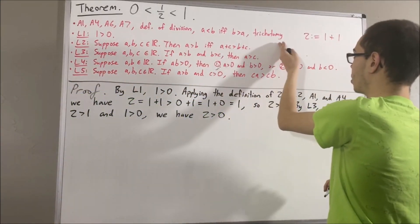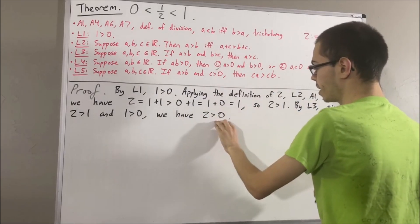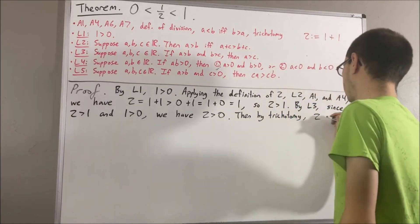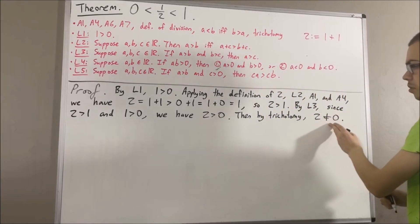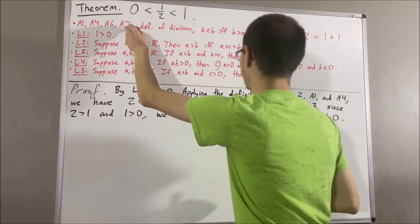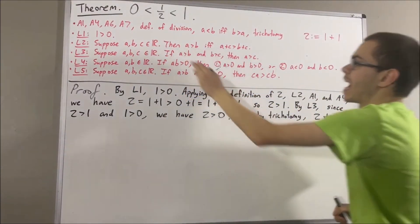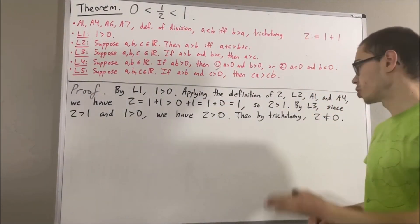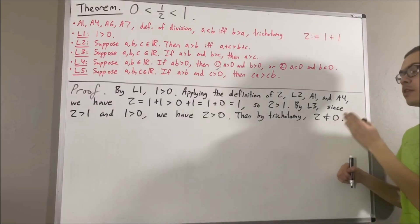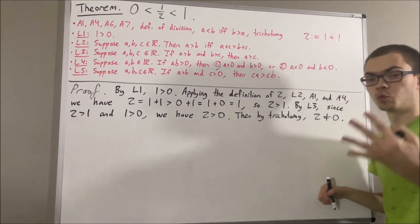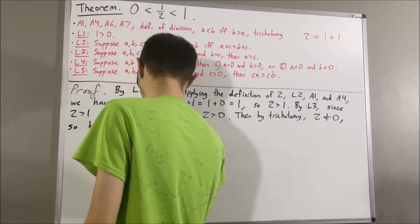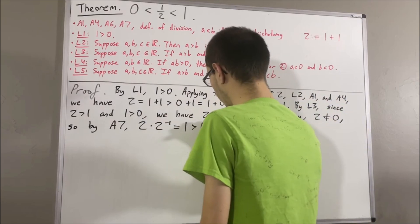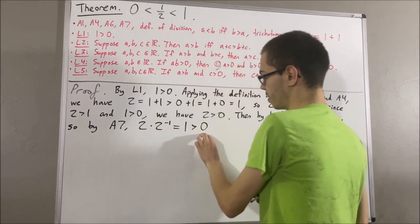By the trichotomy law, since 2 is greater than 0, that tells us 2 cannot be equal to 0. So now that we know 2 is not equal to 0, we can apply axiom 7 to 2. Axiom 7 tells us that every non-zero real number has a reciprocal, so 2 must have a reciprocal, and we have that 2 times the reciprocal of 2 is equal to 1. Let's note again that 1 is greater than 0, so 2 times the reciprocal of 2 is greater than 0.